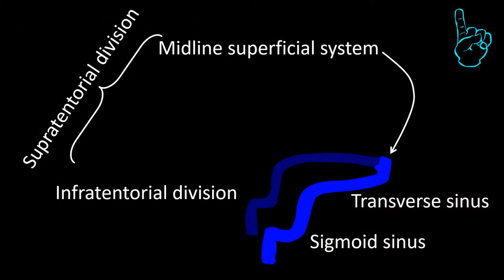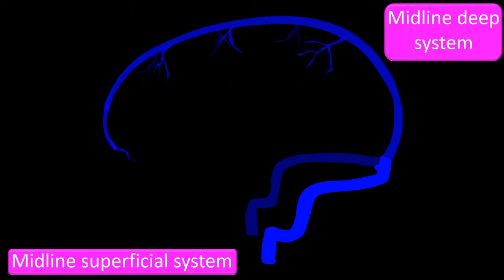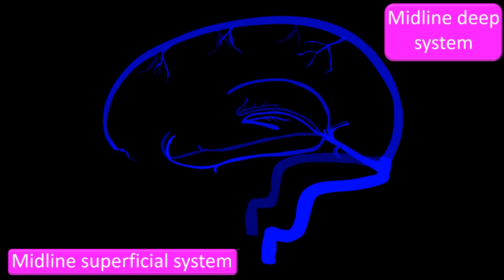This is a sagittal view of the superior sagittal sinus. Also visible in this view are sinus lacunae, emissary veins which connect the intracranial with the scalp veins, and cerebral or bridging veins. The first constituent of the supratentorial draining division is the midline superficial system. The second constituent of the supratentorial division is the midline deep system, which also ends at the confluence of the sinuses.